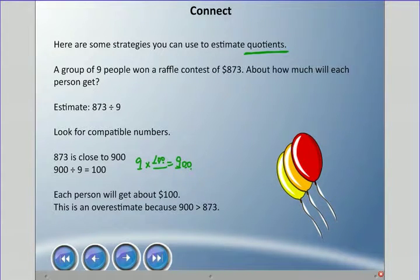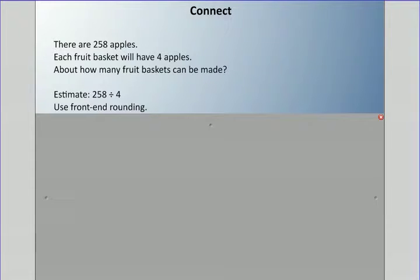Here's another problem: there's 258 apples, and people are making fruit baskets. They want each fruit basket to have four apples. About how many fruit baskets can be made? We're going to use something called front-end rounding this time. That's looking at the first digit or the first couple digits.